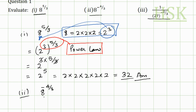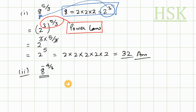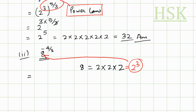In the second part, I have to evaluate 8 to the power of minus 4 by 3. Again, I can write 8 as 2 cube and substitute this value. So this gives me 2 to the power of 3, whole to the power of minus 4 by 3.